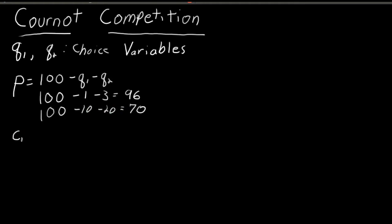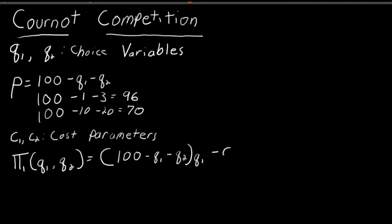We also have these, we will call them parameters, C1 and C2. These are called cost parameters. So C1 is the cost for firm one to produce one unit of Q1. Now what do firms want to do? Firms want to maximize their profits. So we can write the profit function like this. So the profit to firm one is a function that takes as an input Q1 and Q2.